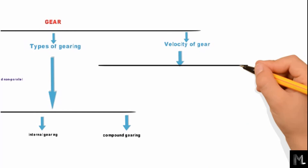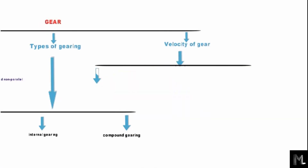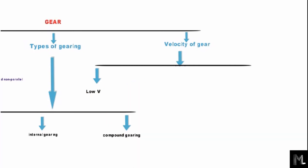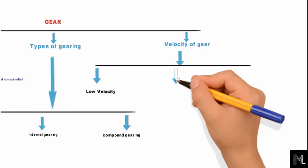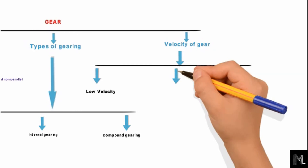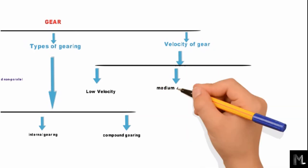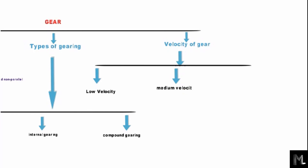Gears are also classified on the basis of velocity. The first type is low velocity gear, where the gear has a velocity of up to 3 meters per second. If the gear has a velocity between 3 meters per second and 15 meters per second, it is called a medium velocity gear. A high velocity gear has a velocity above 15 meters per second.